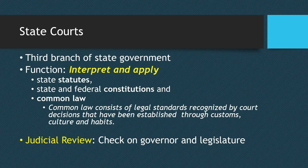Common law is applied in many civil cases, such as contracts, property disputes, and personal injury lawsuits. Most importantly, state judicial systems have the power of judicial review, just like the U.S. Supreme Court does. They can overturn actions of the governor and state legislature if the court finds them to be in violation of the state's constitution or the federal constitution. Judicial review is their key check on the other branches.